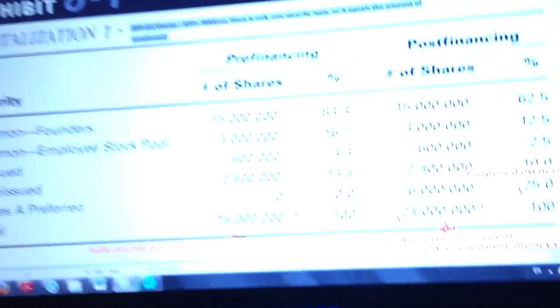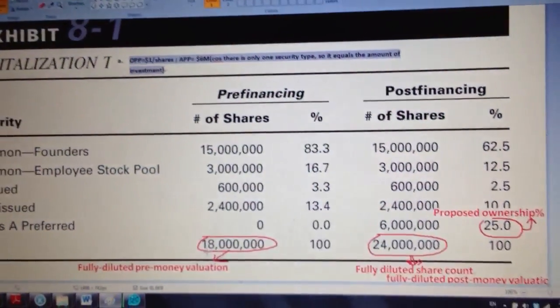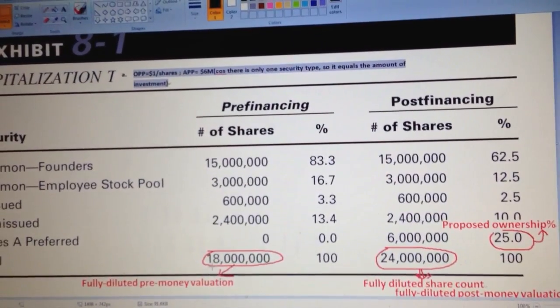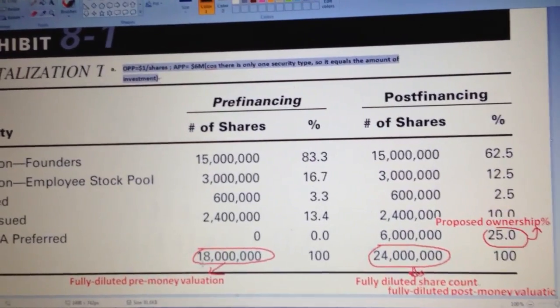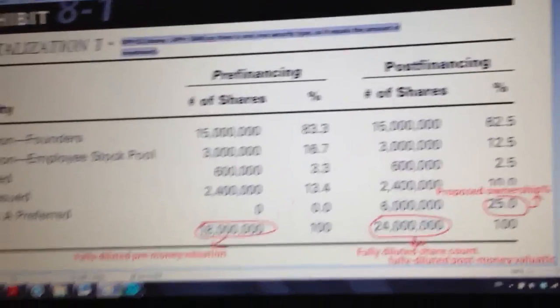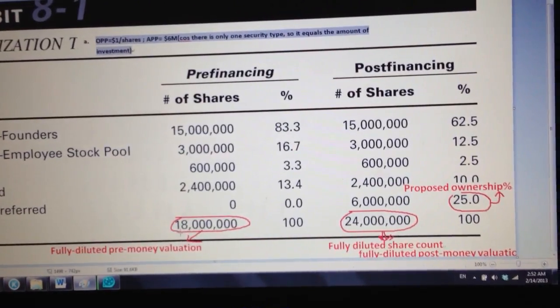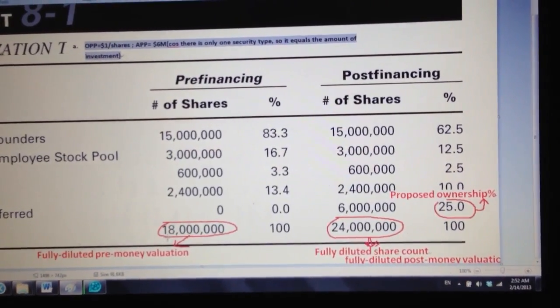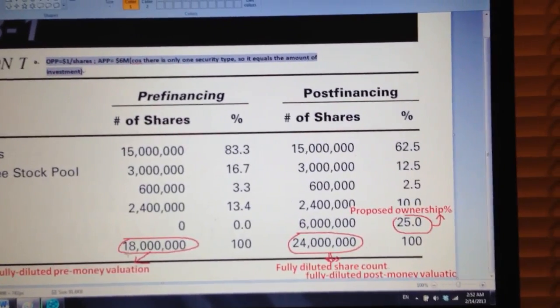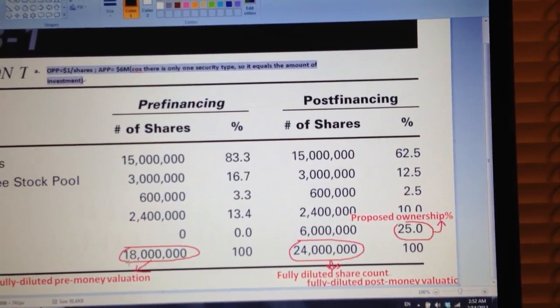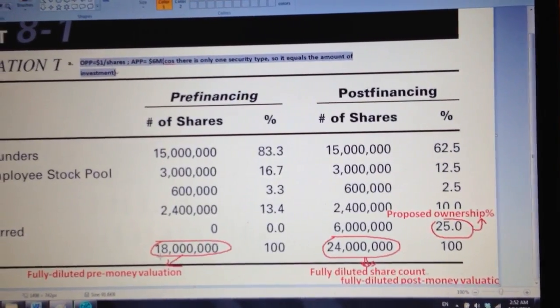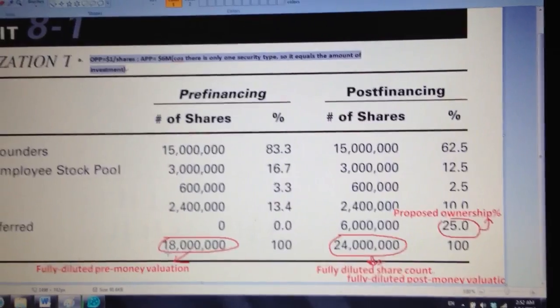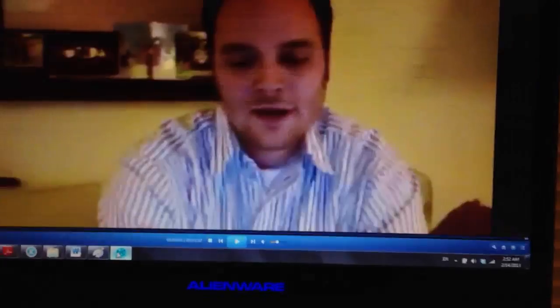For question number 2 in chapter 8, I added a picture for you to see it clearly. The OPP I got is $1 per share, and APP is $6 million. The fully diluted pre-money valuation is $80 million, and both the fully diluted share count and fully diluted post-money valuation are $24 million. The proposed ownership is 25%.